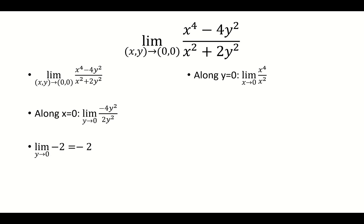And now we're going to look at a different path. This time, we're looking at the path y equals 0, and so now this limit depends only on x, and if we zero out the y, we're just left with x to the fourth over x squared, which is just x squared. And as x approaches 0, x squared also approaches 0.